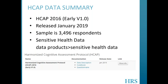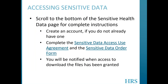Now we'll talk about accessing the data. The data are referred to as HCAP 2016, and they are still in the first version of the early release, which became available in January 2019. The final sample size is 3,496 respondents, but they are only available as a sensitive health data product, which means there's one extra step in accessing them. To gain access to the HCAP data, scroll to the bottom of the sensitive health data page for complete instructions. First, create an account if you don't already have one, then complete the sensitive data use agreement and sensitive data order form, and submit them through the online order system. You'll be notified by email when access to download the files has been granted.